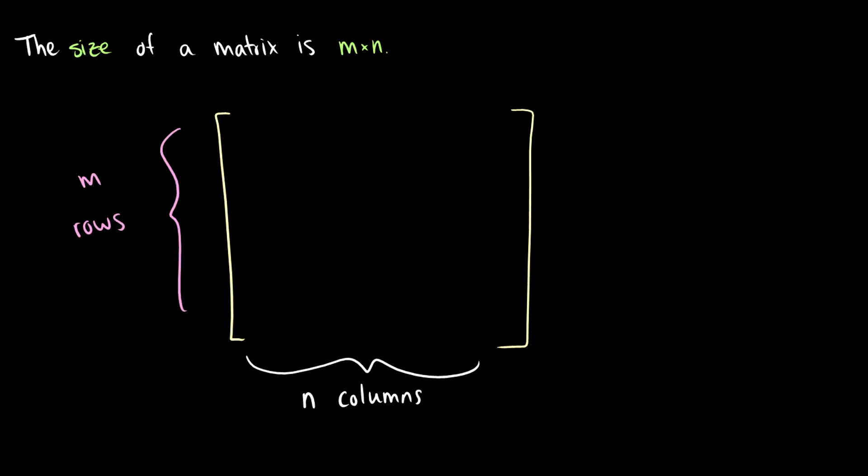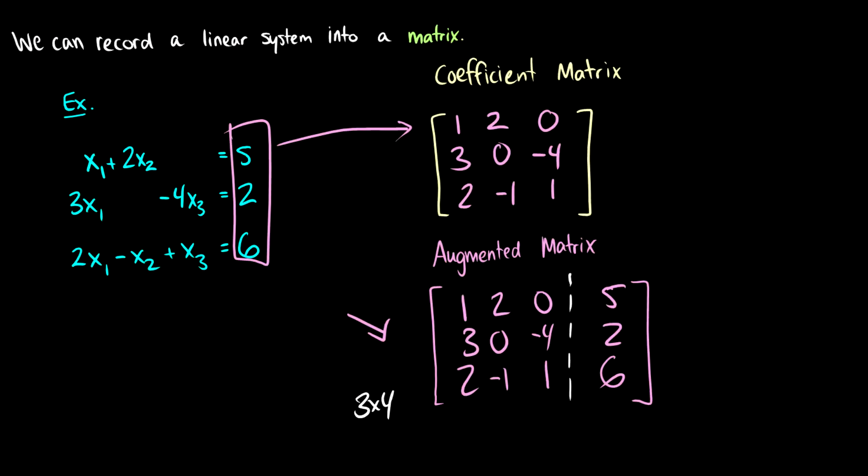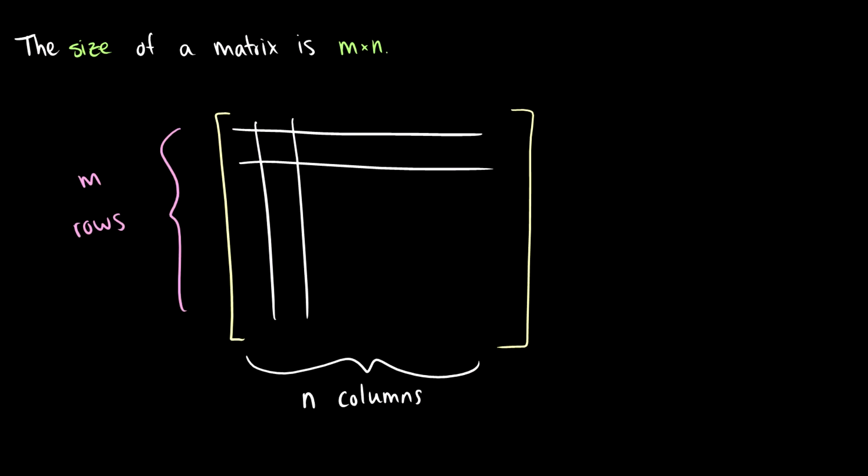So when we have a matrix, we talk about m by n, which means m rows times n columns. So before, when we had our matrix, our augmented matrix is 3x4, which means we have one, two, three rows. These go across, so that's 3 across, and we have 4 columns going down. So this is 3x4. m by n, rows by columns. So that's the size of a matrix.